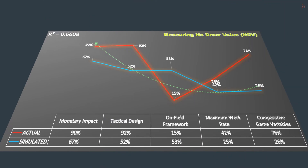NDV is our standard formula used for calculating a percentage of game intensity and effects involving components like monetary impact, tactical design, on-field framework, maximum work rate and comparative game variables. These data contain simulated magnitude of change data as continuous exploration of actual game behaviors. There is a paucity of studies exploring the effects of what possible triggers may occur within these given regressed conditions.